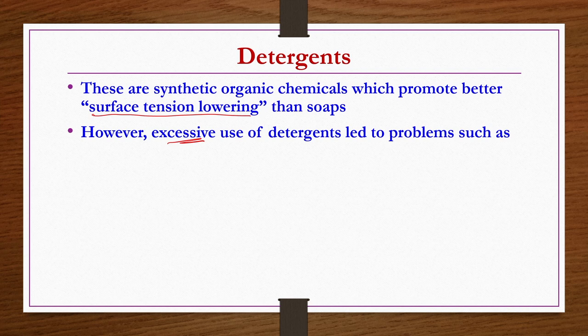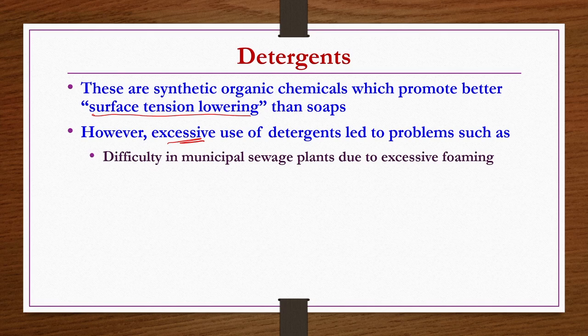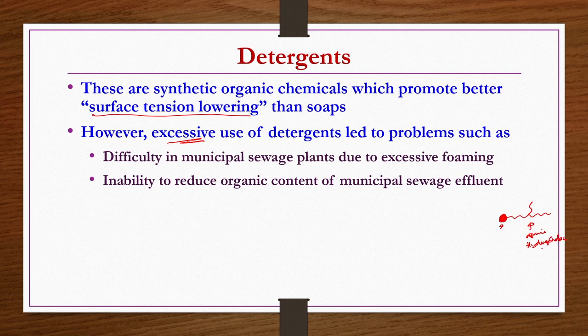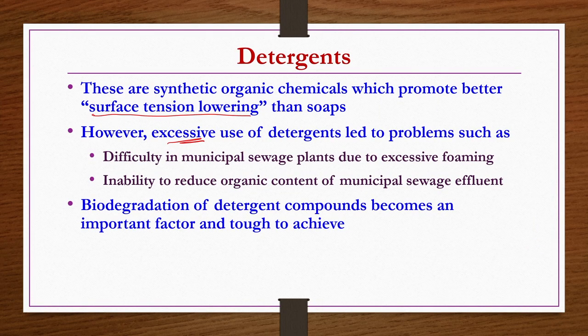We cannot avoid using detergents — they are essential for household purposes — but they should not be used excessively so that problems like difficulty in municipal sewage plants due to excessive foaming do not arise. The inability to reduce organic content of municipal sewage effluent is another concern. Biodegradation of detergent compounds becomes an important factor and tough to achieve in general. Detergent compounds which can be oxidized to simple end products, known as biologically soft syndets, are good and preferred in detergent compounding.